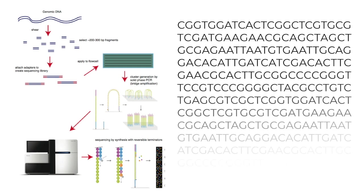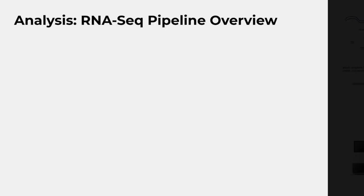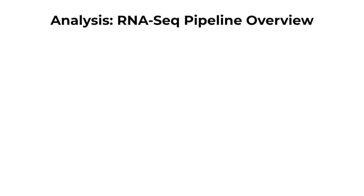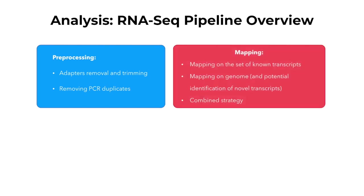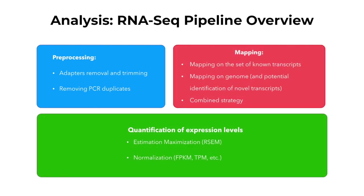Typically, NGS reads are between 30 and 300 base pairs long and consist of a series of letters T, C, G, and A. A typical RNA-seq pipeline includes three main steps: pre-processing, mapping, and quantification.